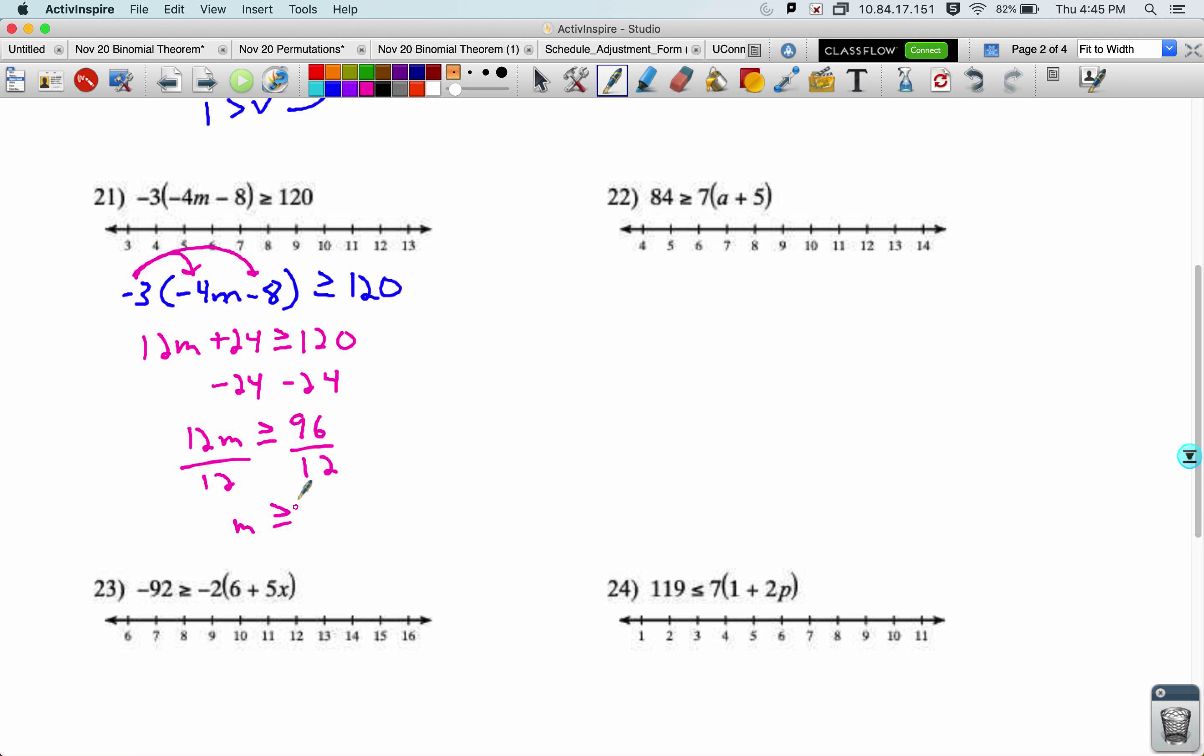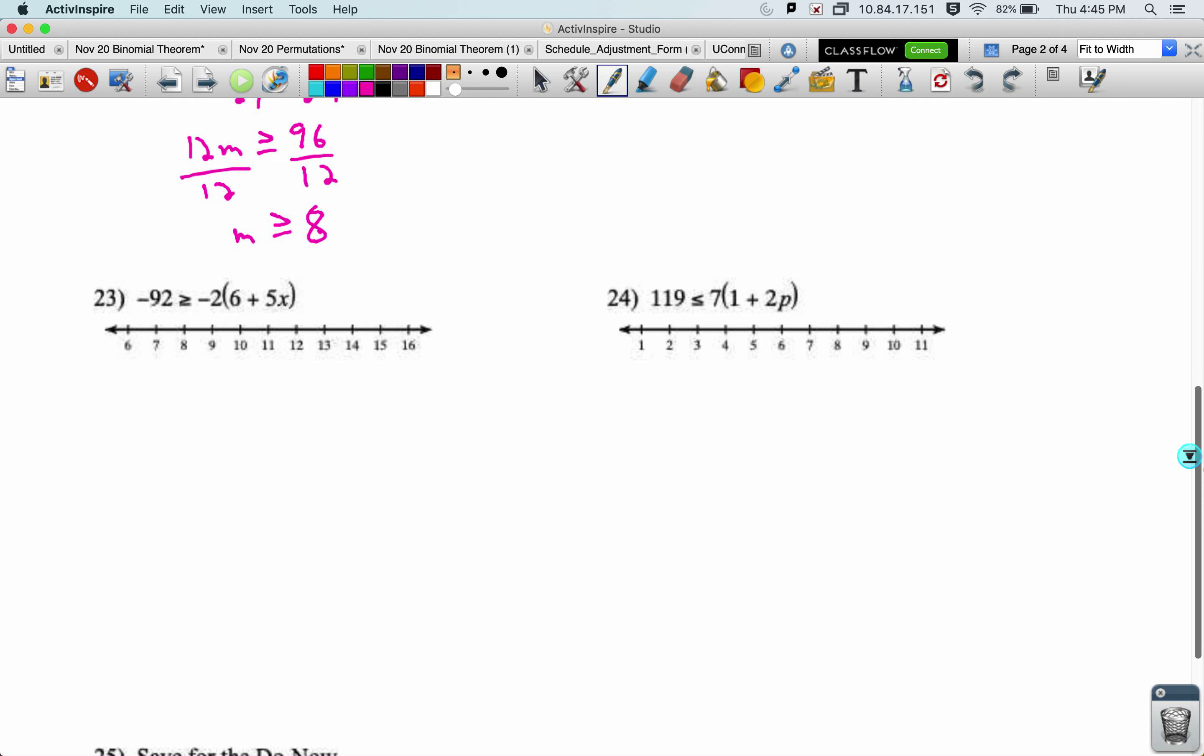I get that m is greater than or equal to, my calculator, 96 divided by 12 is 8. So closed dot at 8. Arrow going to the right.